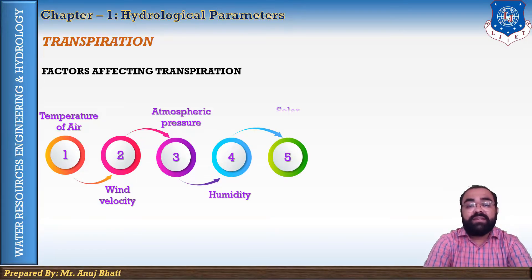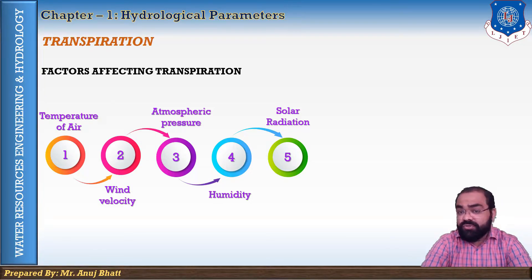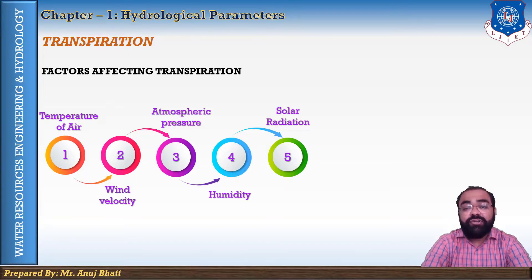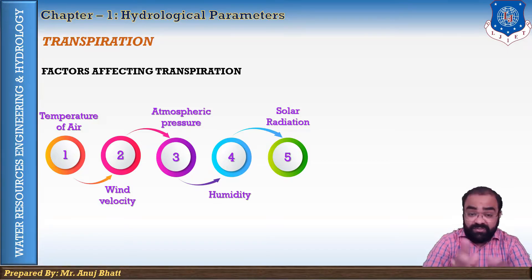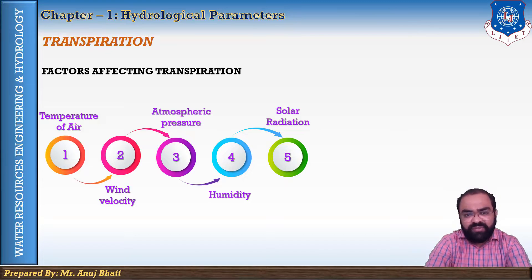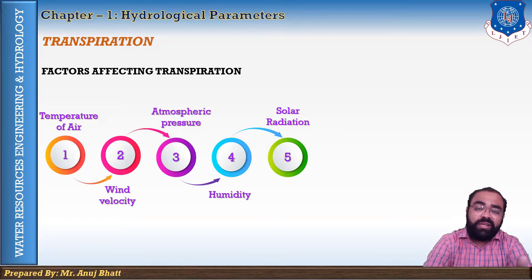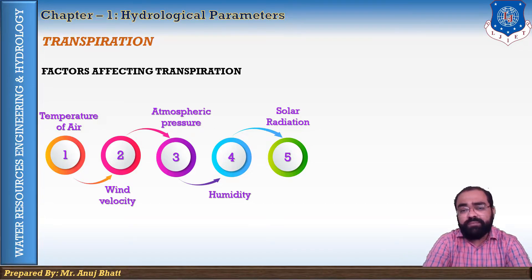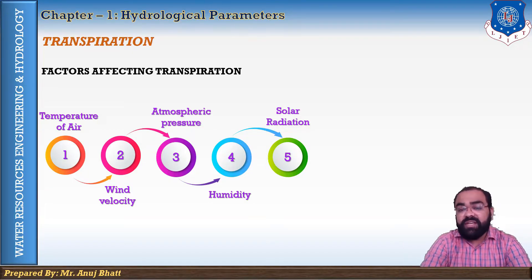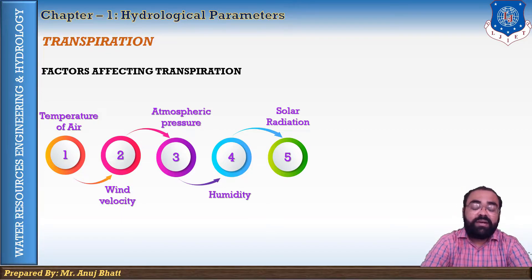The fifth factor is solar radiation. Transpiration occurs during photosynthesis, which usually occurs during sunlight, and hence most transpiration occurs during daylight hours. About 95% of the total transpiration occurs in daylight. Transpiration increases as solar radiation increases, and it is almost correlated with air temperature. Transpiration can be decreased by reducing solar radiation, which is only possible in the evening or at night, or by providing shade on the trees or leaves, which also decreases solar radiation and thereby decreases transpiration.